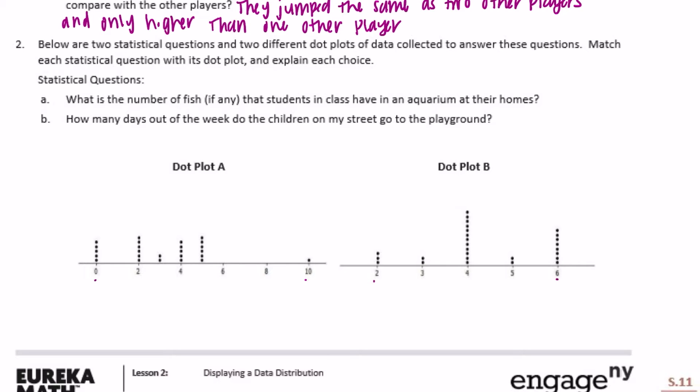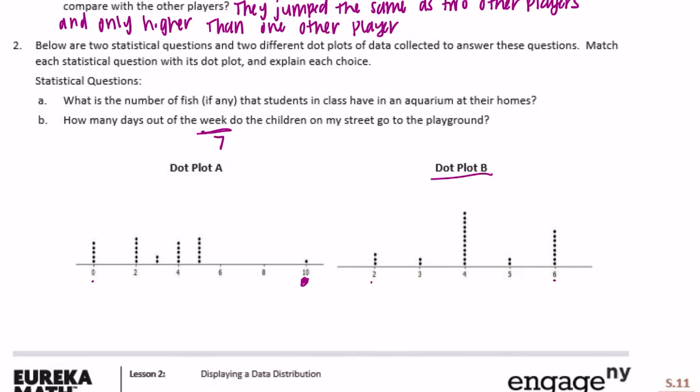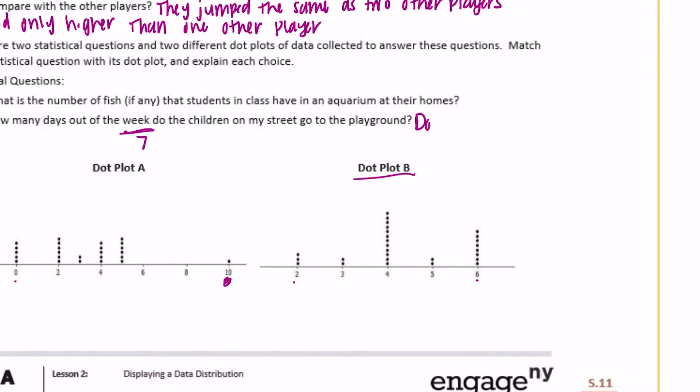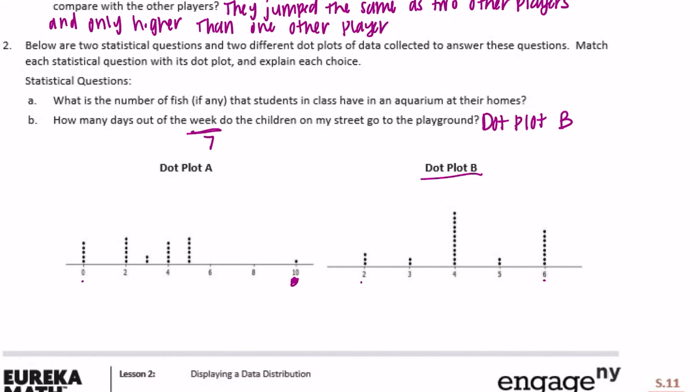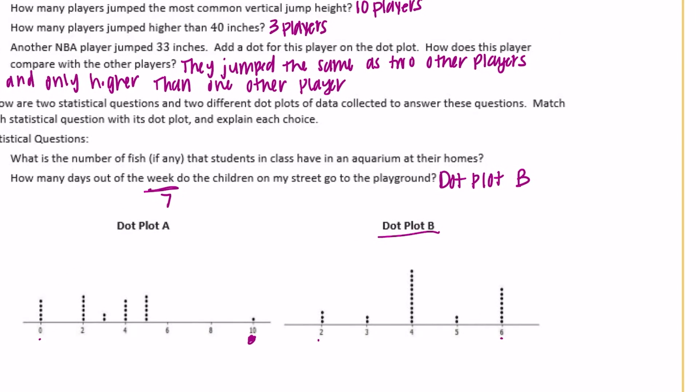Well, days of the week, there are only seven days of the week. So if we're looking at dot plot A, someone over here says that children on their street go to the playground ten days a week. That doesn't make sense, right? Because there's only seven days a week. So that means that dot plot B must go with B, and then we can say dot plot A officially goes with A.